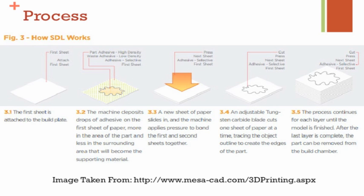Next, the sheet is cut either by a tungsten blade or a carbon dioxide laser. The cuts are made in a square fashion — within the cross-section the cuts are finer, while outside the cross-section the squares are bigger. This process repeats itself until eventually a full 3D model is formed.